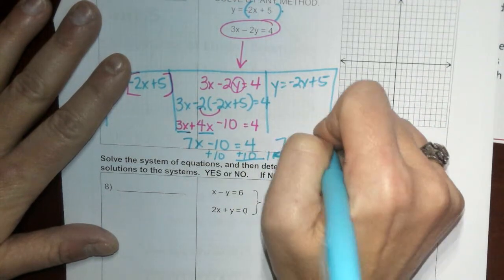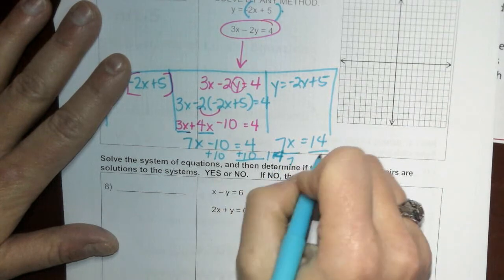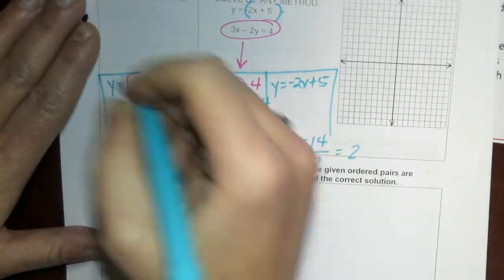And then move the 10 over to the other side by adding 10, and I get 14. 7x equals 14, divide by 7, and you get 2 for x.